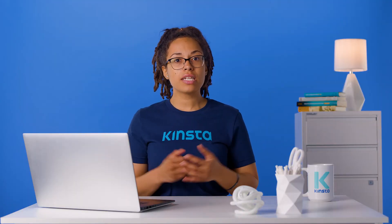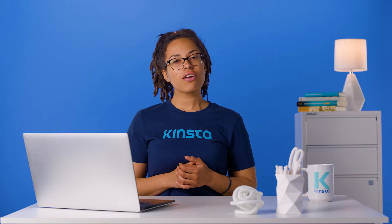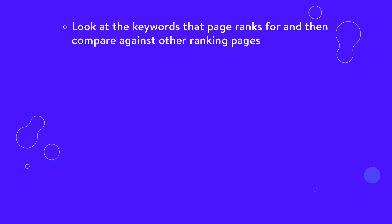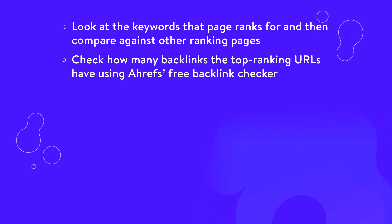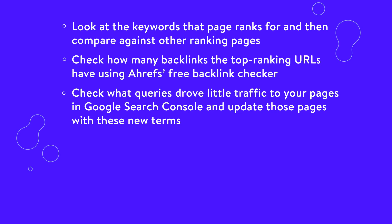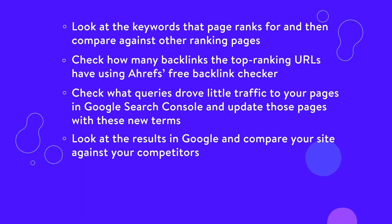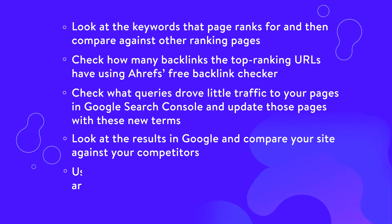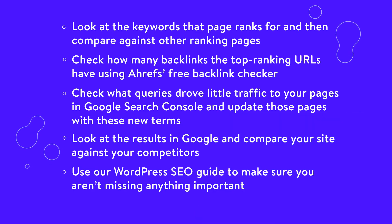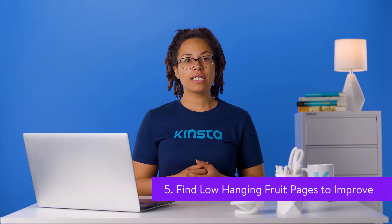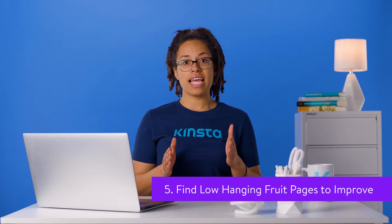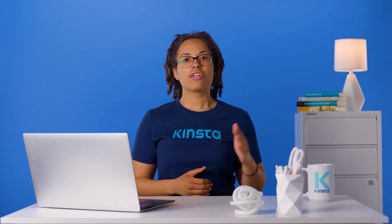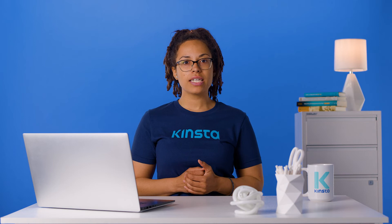So now what? Now you need to try and improve that page's conversion rate. Here are a few things you can try: look at the keywords that page ranks for and compare against other ranking pages; check how many backlinks top ranking URLs have using Ahrefs' free backlink checker; check what queries drove traffic to your pages in Google Search Console and update those pages with new terms; look at the results in Google and compare your site against your competitors; and use your WordPress SEO guide to make sure you aren't missing anything important.